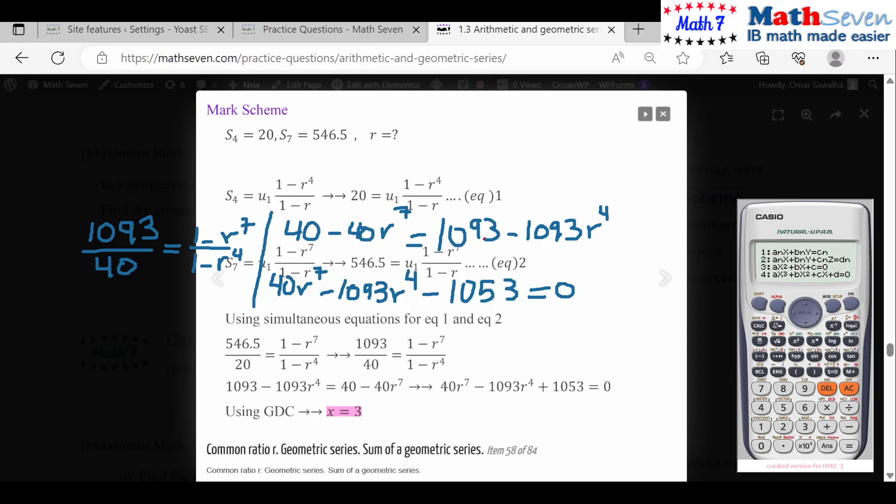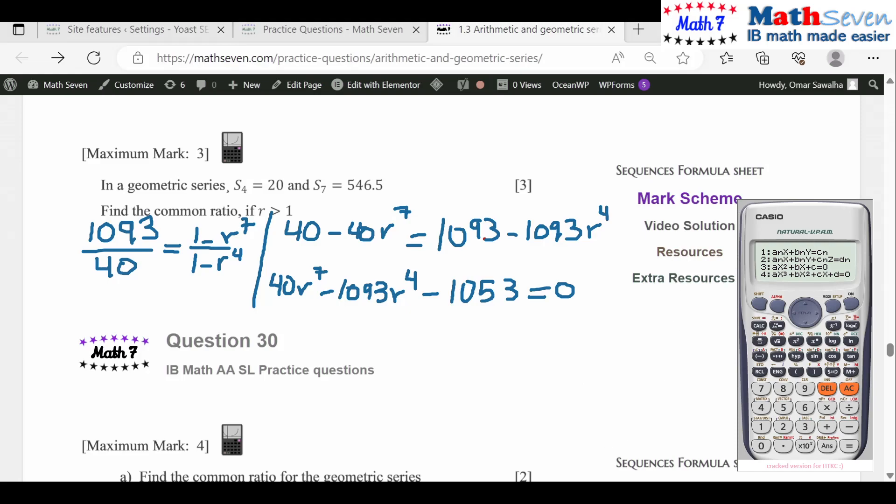You gotta use the solve function. So: 40 minus 40x^7 minus 1093x^4 minus 1053, alpha equals to zero.